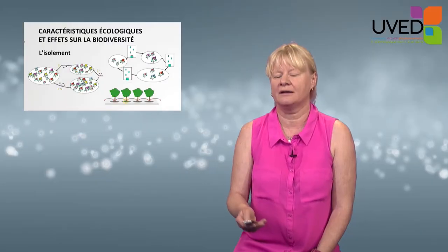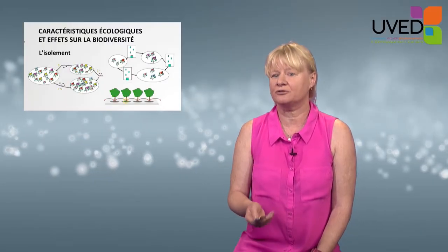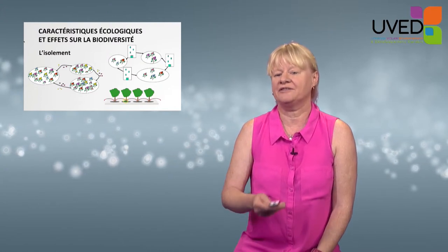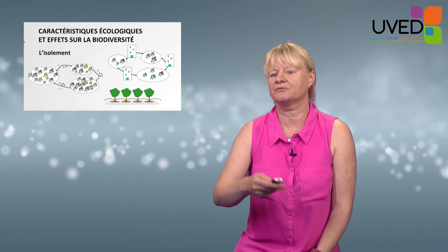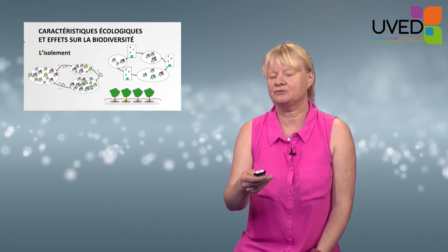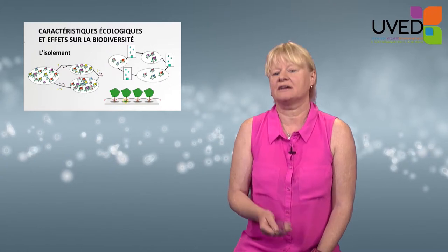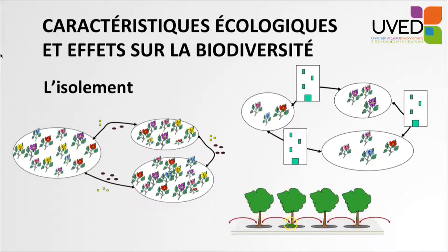We know that populations of living beings must be made up of a number of genetically diversified individuals, with connections between populations and exchanges of genes. As shown on the left-hand side of the slide, in towns the situation is different — not only is the population of plants smaller, but gene circulation is blocked by the presence of buildings.